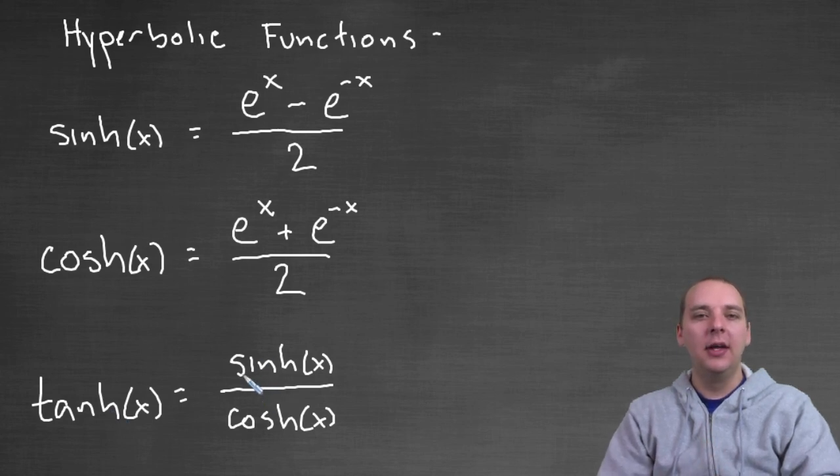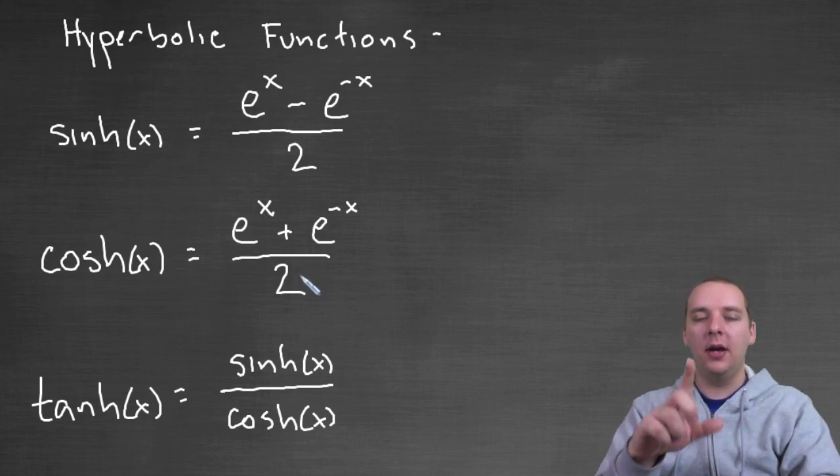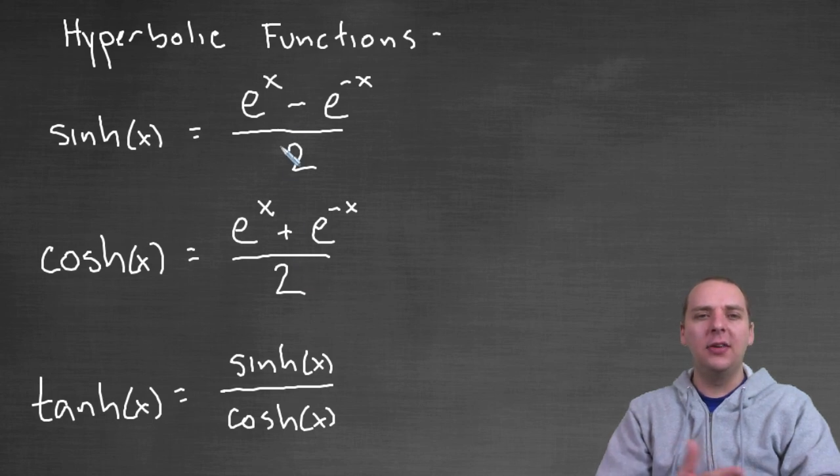But I can't stress this enough. These are not trigonometric, they're not periodic. They don't repeat like cyclically, like sine goes up and down and up and down. And in fact, they're defined by exponential functions. So it seems very odd that we would write them in terms of sine and cosine and tangent if they don't resemble trig functions whatsoever.